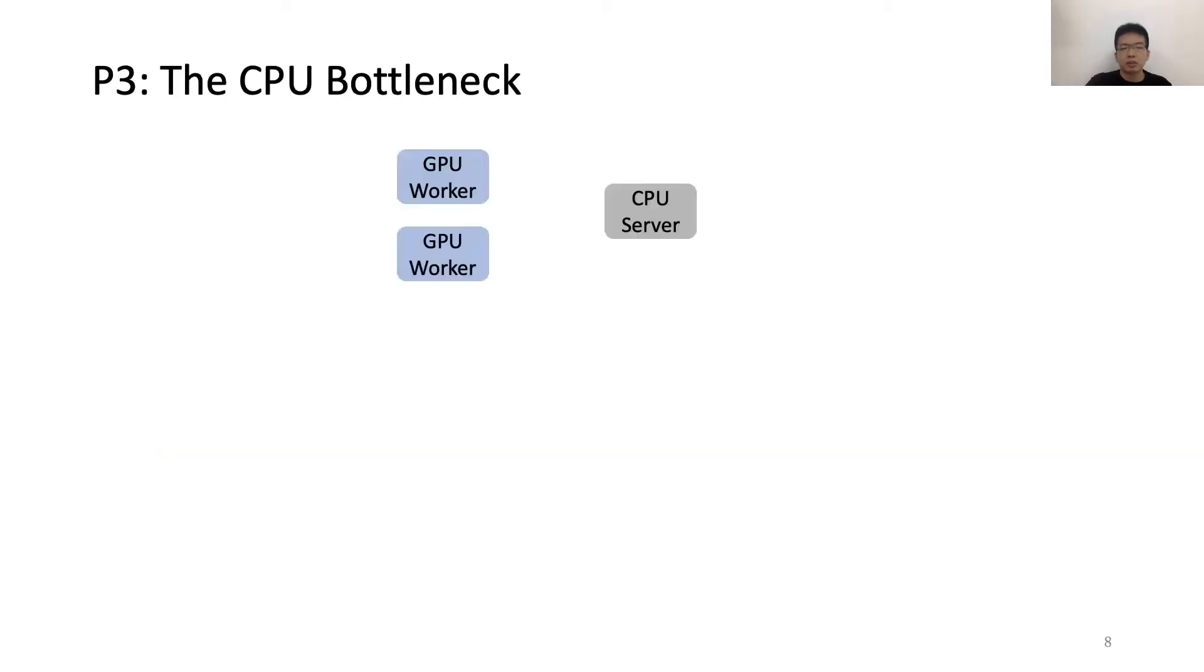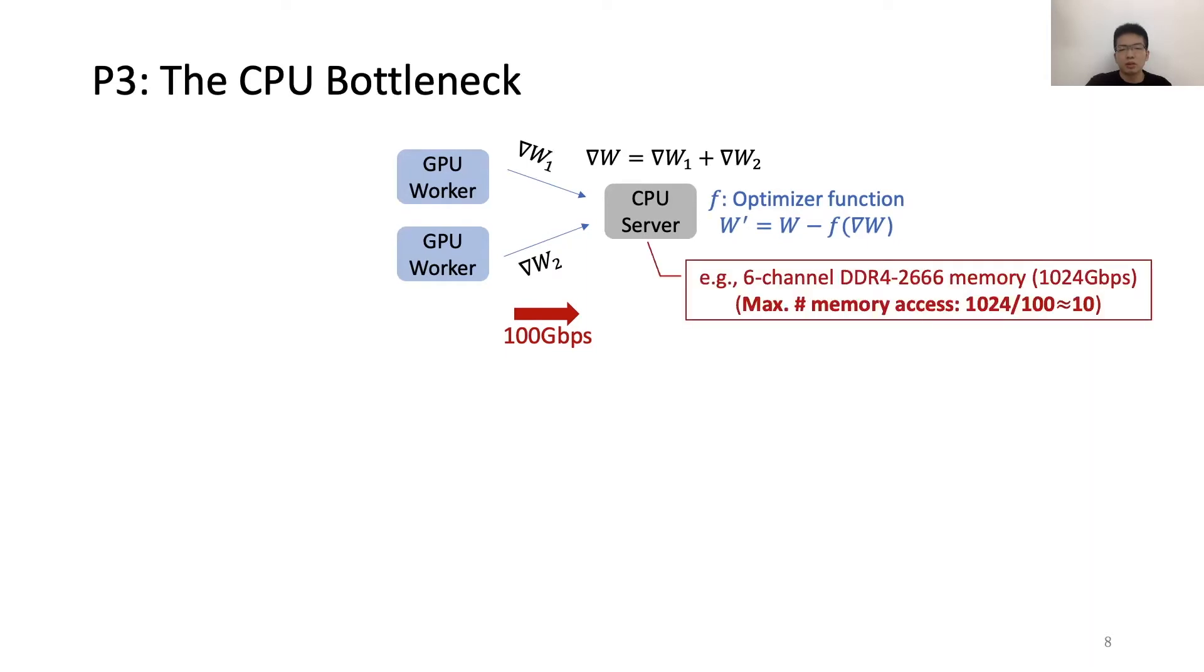Problem three is the CPU bottleneck. This is a motivating example of the PS architecture. When GPU workers send the gradients to the CPU server, the server first aggregates the gradients, and then updates the parameters using the optimizer function. As a typical setup in modern DNN training clusters, we use 100 gigabit gradient flow as the input, and the CPU server uses the 6-channel DDR4 memory, which is also used in NVIDIA DGX2.